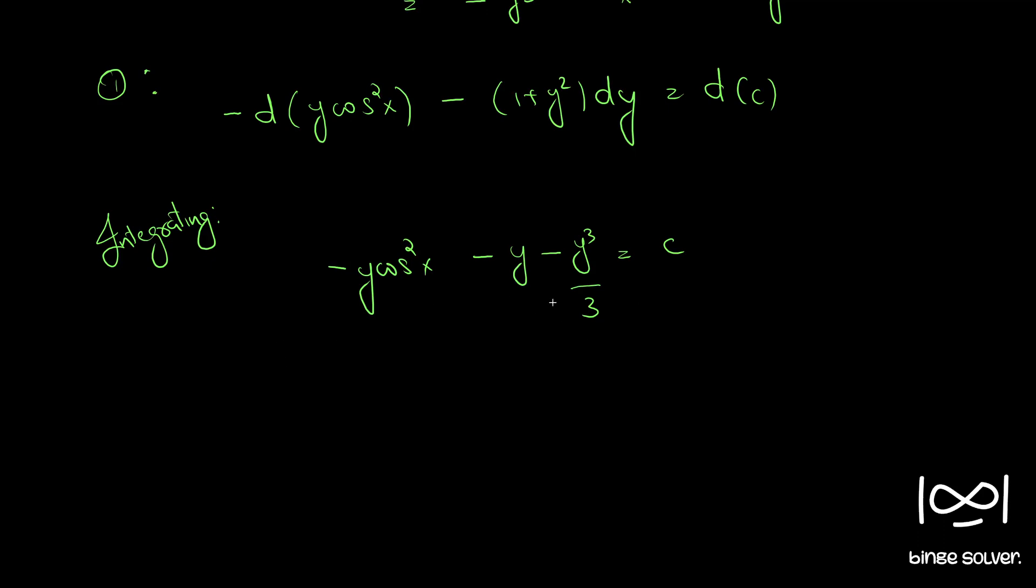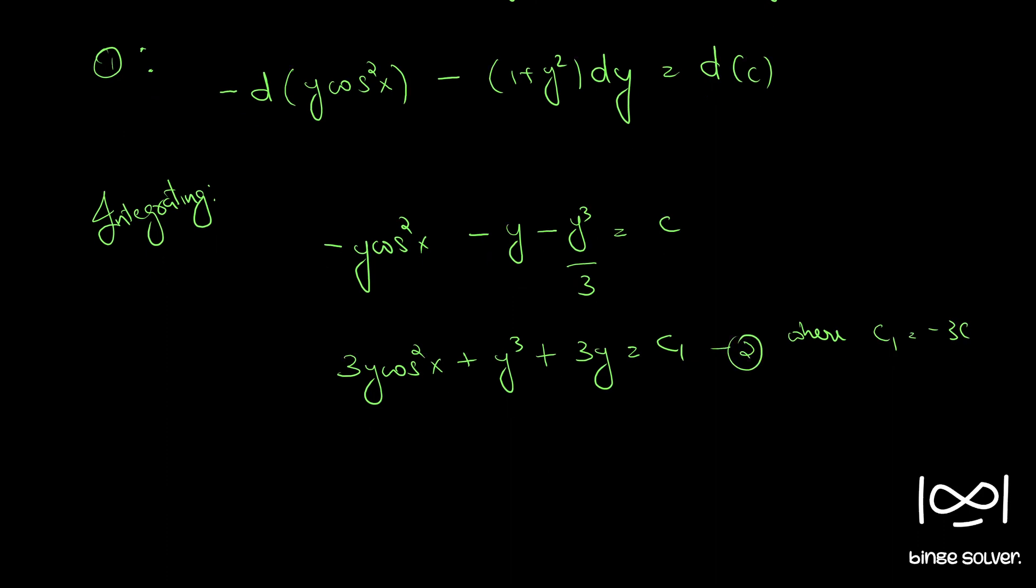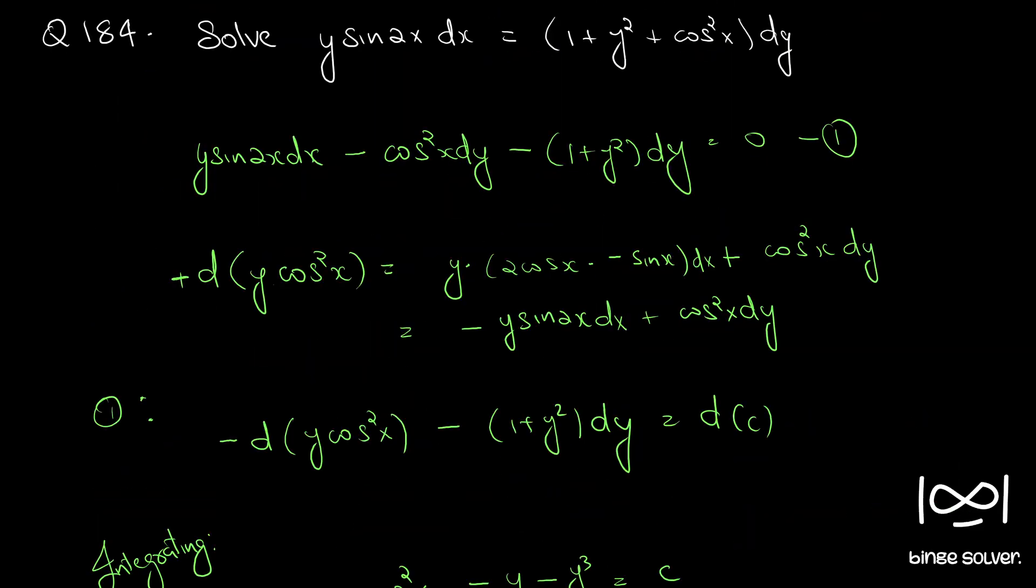So, we multiply by minus 3 throughout, we get 3y cos square x plus y cube plus 3y equal to another constant, c1, where c1 equal to minus 3c. So, this is the solution to question number 184.